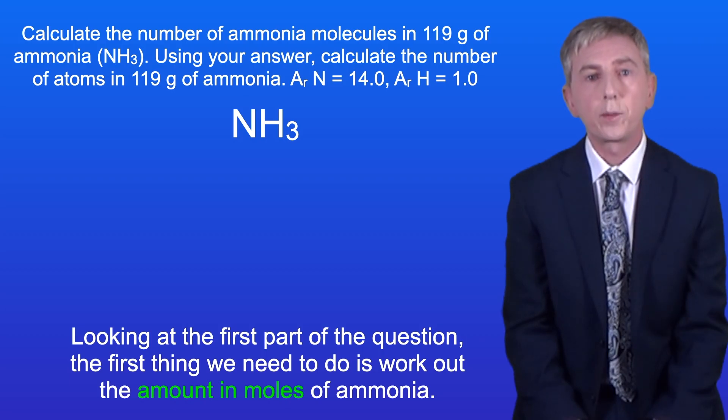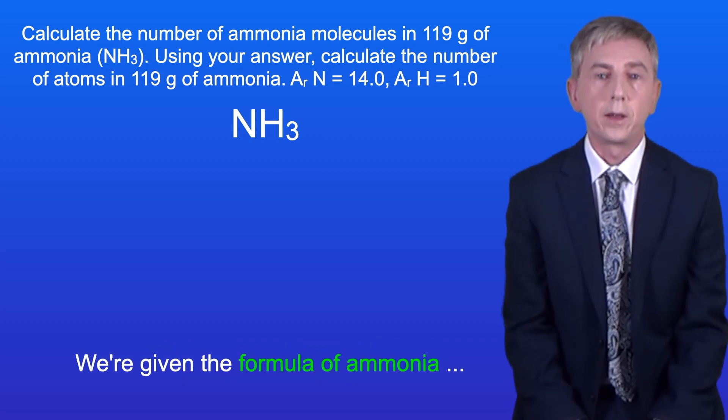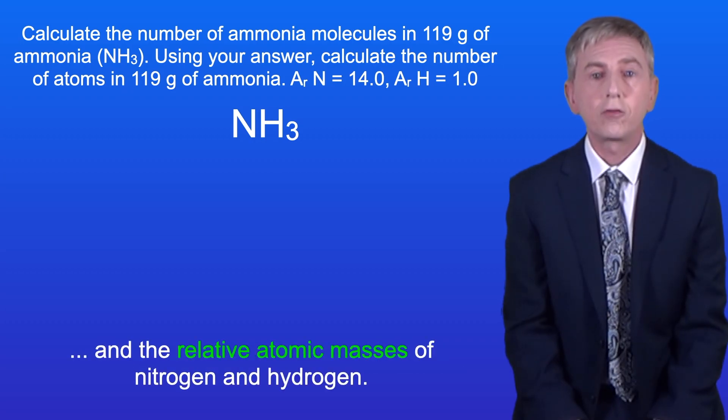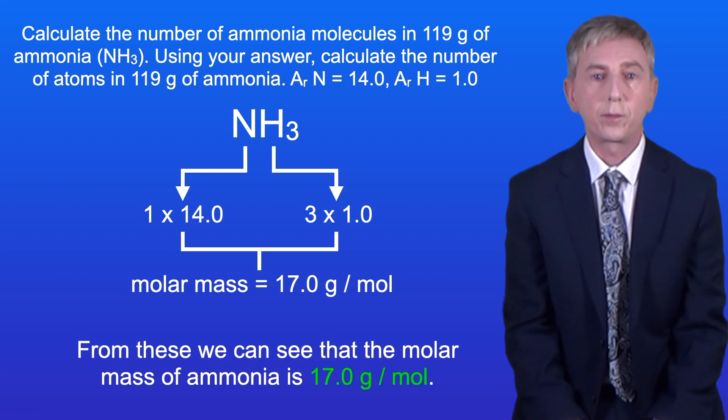Okay, looking at the first part of the question, the first thing we need to do is work out the amount in moles of ammonia, and to do that we need to calculate the molar mass. We're given the formula of ammonia and the relative atomic masses of nitrogen and hydrogen. From these we can see that the molar mass of ammonia is 17.0 grams per mole.